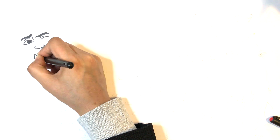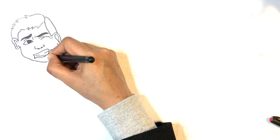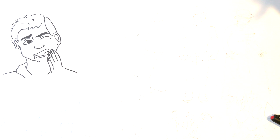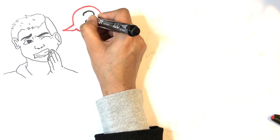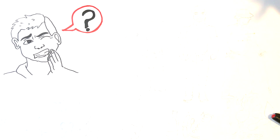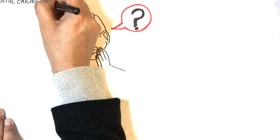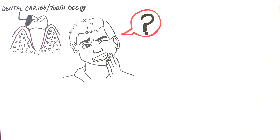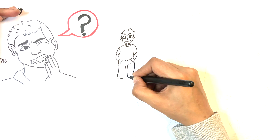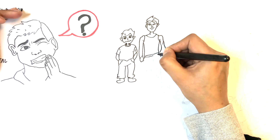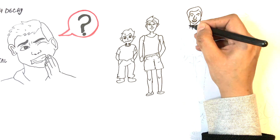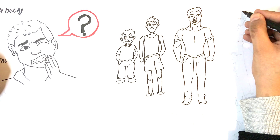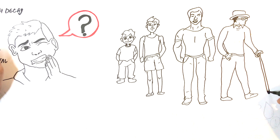Almost every one of us experiences some sort of tooth problems throughout our lives. Have you ever wondered why? Dental caries, commonly called tooth decay or cavities, is one of the most common dental diseases and is experienced by all age types. Let's see why and how.